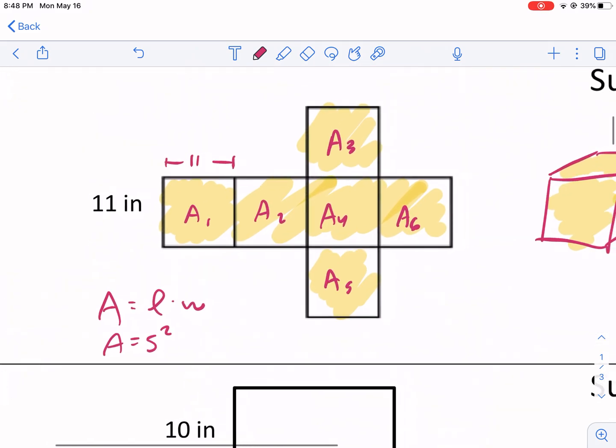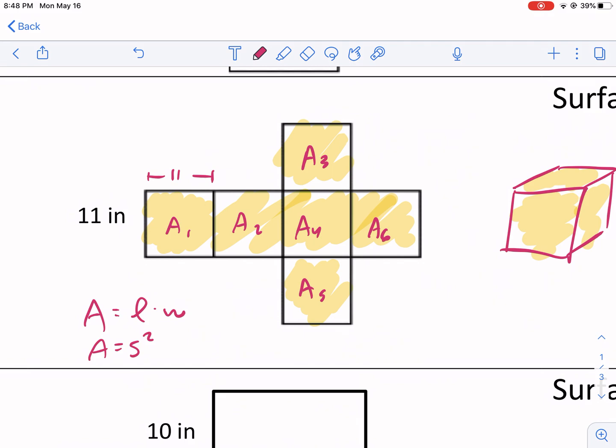I'm just going to do length times width, that's more familiar to most people. That's just going to be 11 times 11. Let me just highlight it for you - this is that 11 and that 11, the length times the width. And I know I multiply those together, and I get 121 inches squared. That's just for one square.